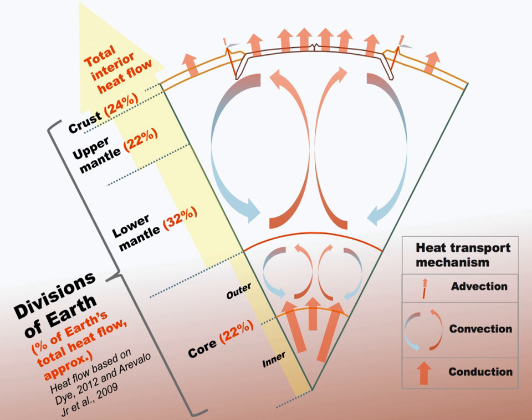Earth's inner core is the innermost geologic layer of the Earth. It is primarily a solid ball with a radius of about 1,220 kilometers, which is about 20% of the Earth's radius and 70% of the Moon's radius.